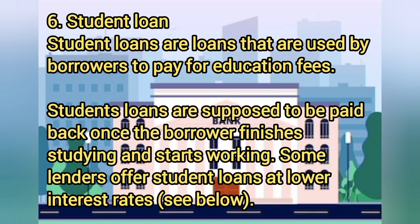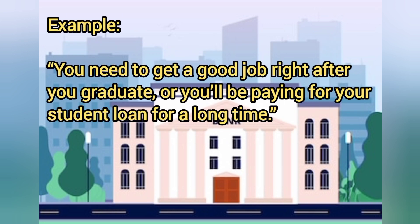Six: student loan. Student loans are loans used by borrowers to pay for education fees. Student loans are supposed to be paid back once the borrower finishes studying and starts working. Some lenders offer student loans at lower interest rates. Example: you need to get a good job right after you graduate, or you'll be paying for your student loan for a long time.